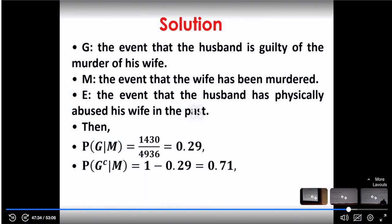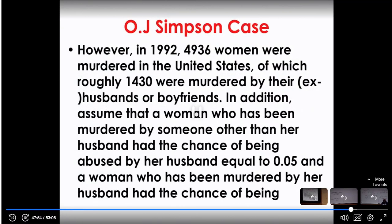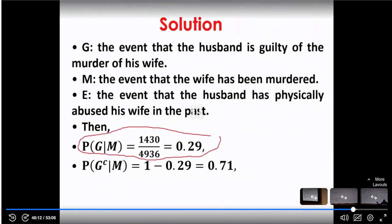The probability of G given M — the probability that the husband is guilty given that the wife has been murdered — where do we get this statistic? In 1992, out of 4,936 women murdered in the United States, 1,430 were actually murdered by their ex-husband or boyfriend. That is how we find that ratio, which is 0.29 — that is 29 percent, which is very small.